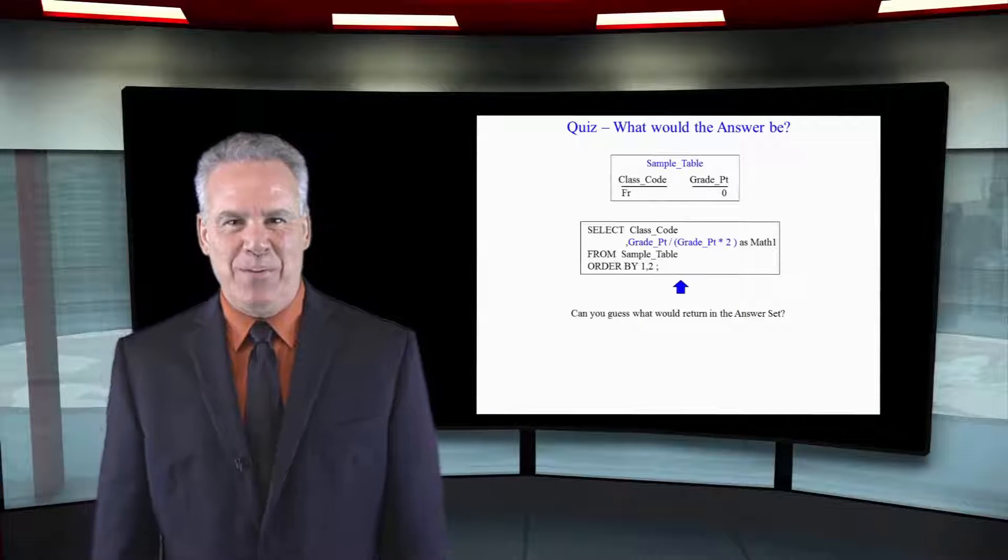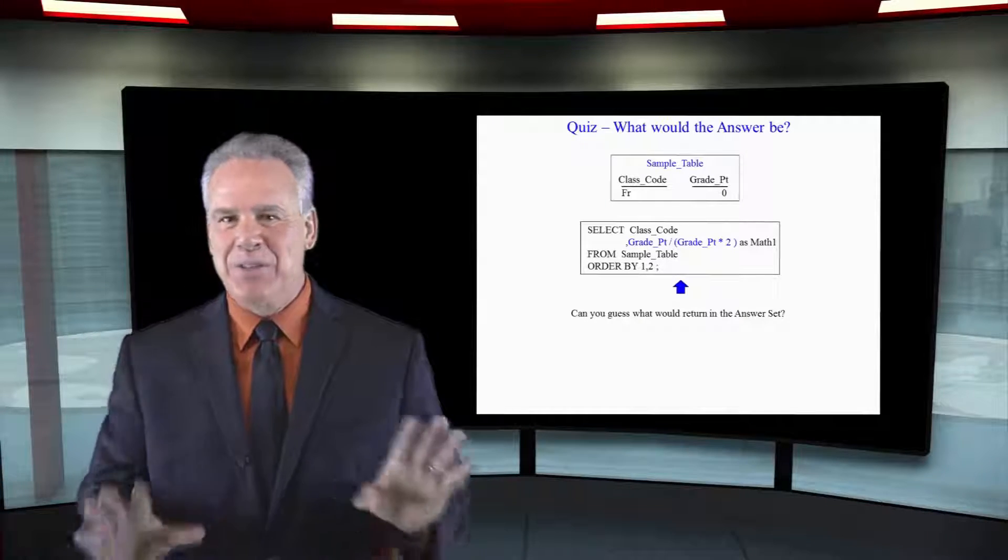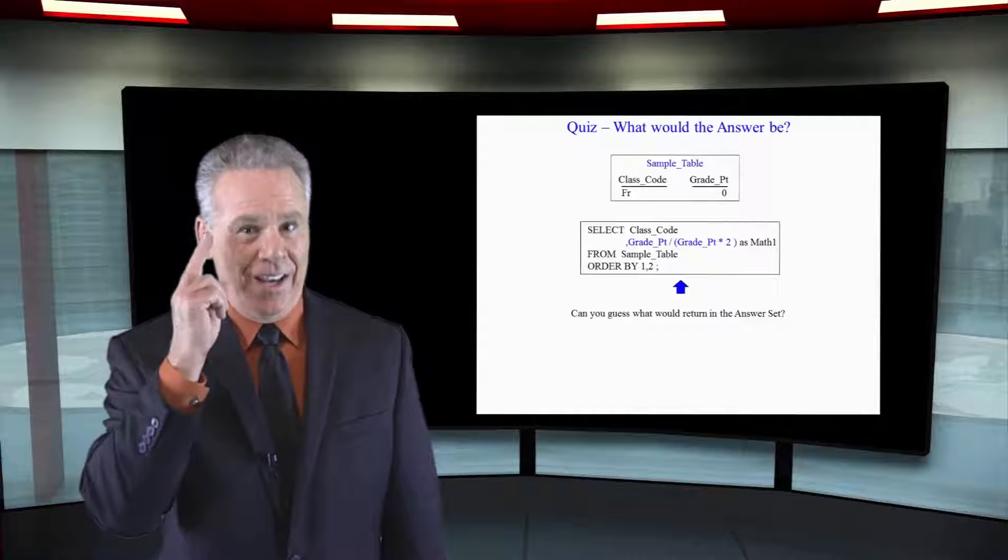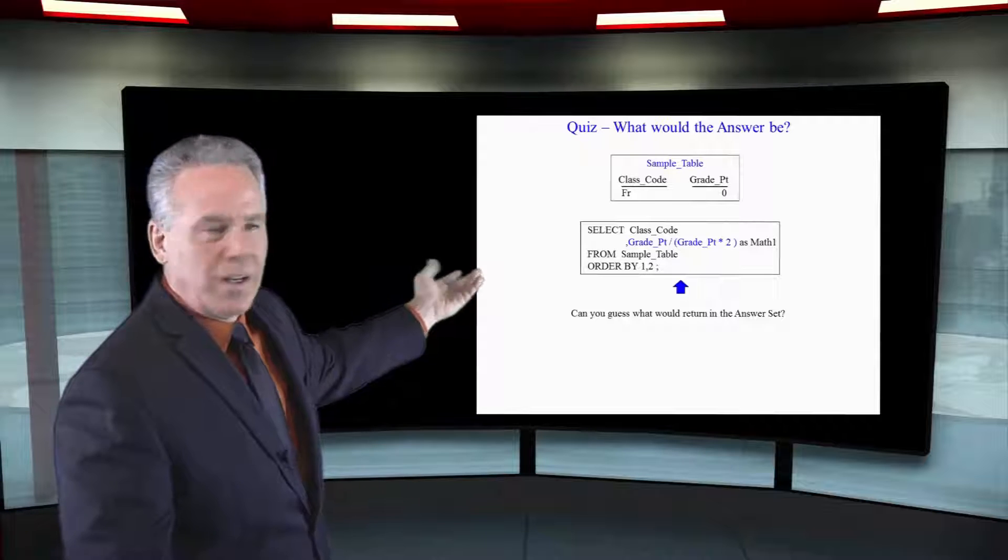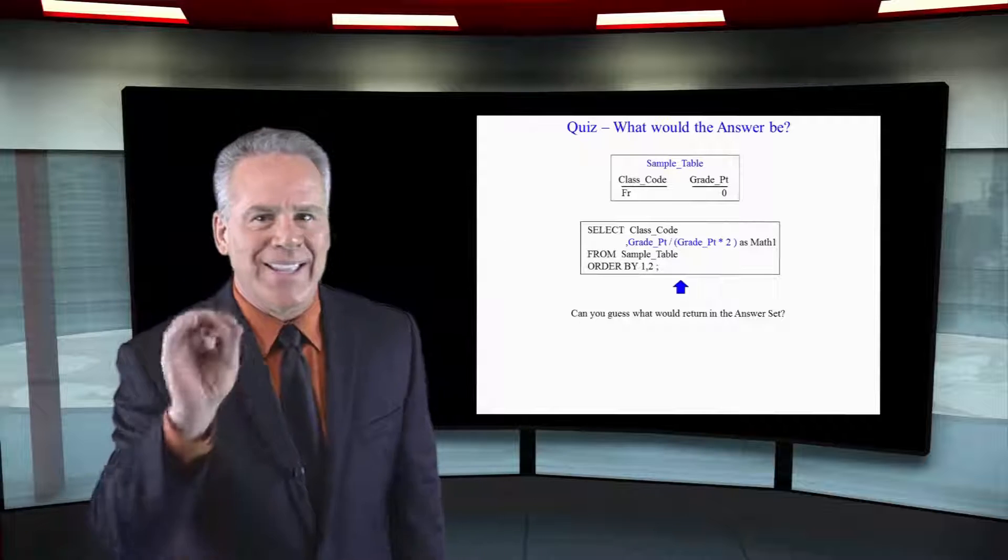Take a look at this sample table. It doesn't really exist. I've just put it in here so it exists in your mind. Now here's the sample table. I've got two columns in it: class code (they're a freshman) and I've got their grade point. It's a zero.